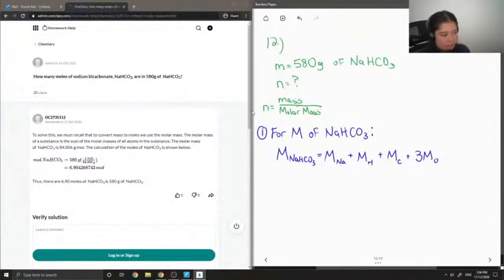So now I'm just going to plug in their different atomic weights. For sodium it's 22.99 grams per mole, hydrogen is 1.01 grams per mole, carbon is 12.01 grams per mole, and then I'm going to do 3 times the molar mass of oxygen which is around 16 grams per mole.